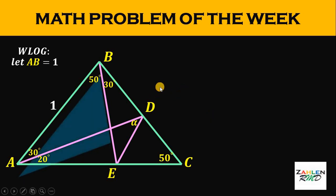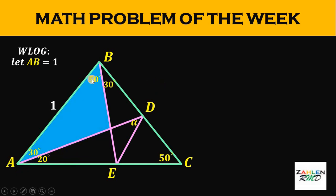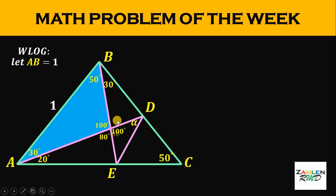First, consider this triangle. We know that the angles inside a triangle add up to 180 degrees. We have 50 degrees and 30 degrees, so the remaining angle must be 100 degrees. Now, vertical angles are congruent, therefore this angle must also be 100 degrees. Next, we have a straight angle because we have a straight line, and the straight angle measures 180 degrees. Since we have 100 degrees, it follows that this angle must be 80 degrees. And again, vertical angles are congruent, so the other angle must also be 80 degrees.